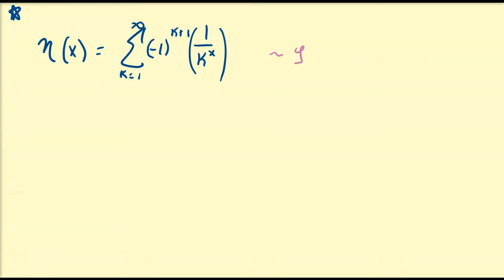This series-defined function should look vaguely familiar to the Riemann zeta function, which is defined to be equal to the sum from k equals 1 to infinity of 1 divided by k to the x. In a sense, the Dirichlet eta is an alternating form of the Riemann zeta function.